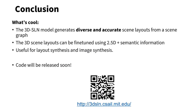As a conclusion, we have introduced a way for conditional layout generation, which we call a 3D scene layout network. It is capable of generating both accurate and diverse scenes. By integrating a differentiable renderer, we can further refine object positions by comparing against the target 2.5D and semantic image. Our network lends itself to diverse applications, such as generation of indoor layouts, image generation, and exemplar-based image-conditioned layout generation. Please check out our paper. Here is a QR code and a link to our project. We plan on releasing the code soon. Thank you for listening.